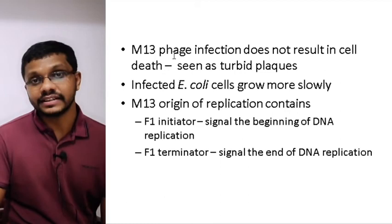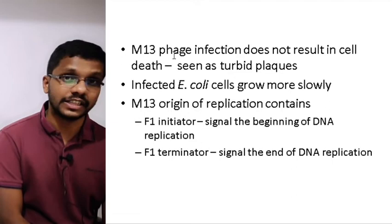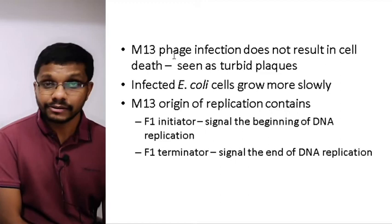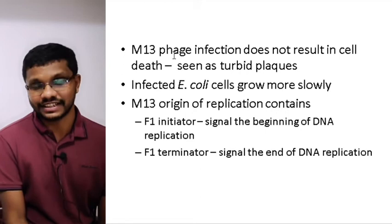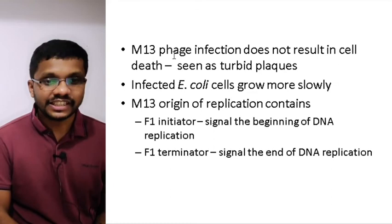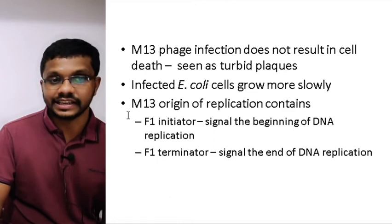M13 phage infection does not lead to plaque formation; instead we get turbid colonies. The infected E. coli produces so many phage particles that its growth rate is reduced, producing the turbid colony appearance. The M13 origin of replication is unique because it supports both double-stranded and single-stranded DNA replication. Inside the F1 origin of replication there are two fused regions: the F1 initiator, where replication begins, and the F1 terminator, where replication ends.